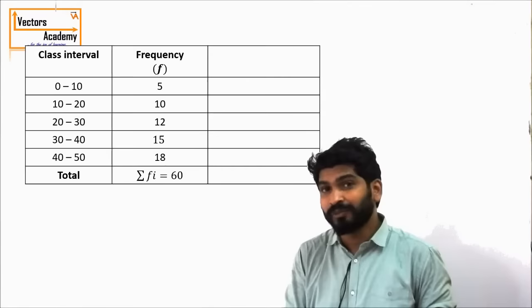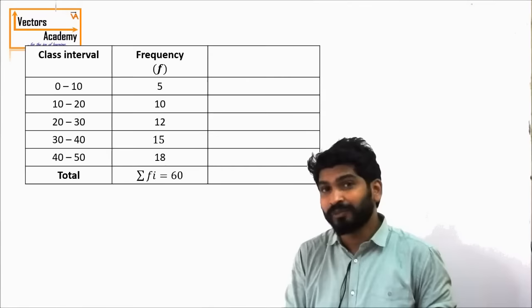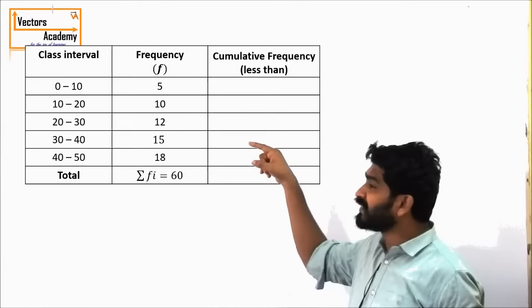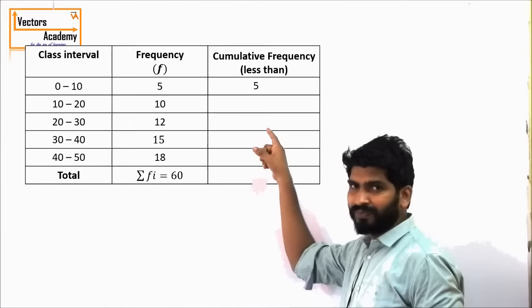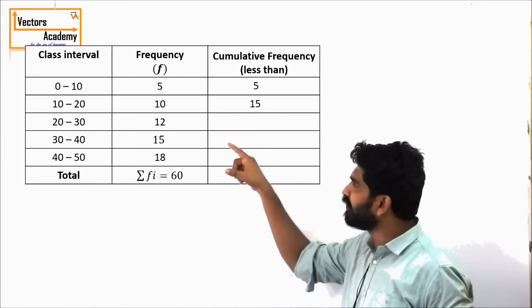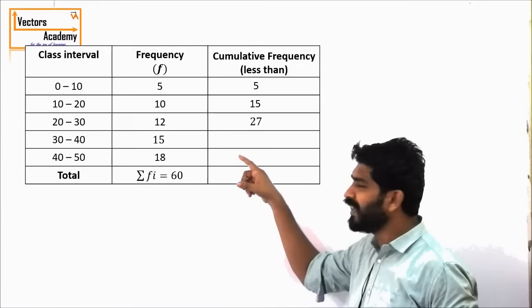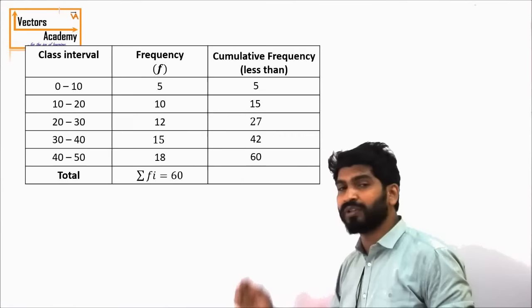In cumulative frequency — or less than cumulative frequency — what we do is keep on adding the frequencies. The frequency means the number of students. The number of students in the first class is 5. We add this 5 with the frequency of the next class, 10, giving 15. Then we add 15 to the next frequency, 12, and so on. The final value in the cumulative frequency should equal 60, the total number of students.